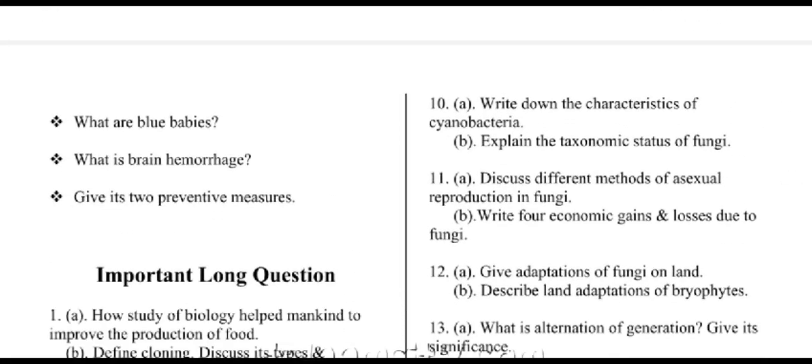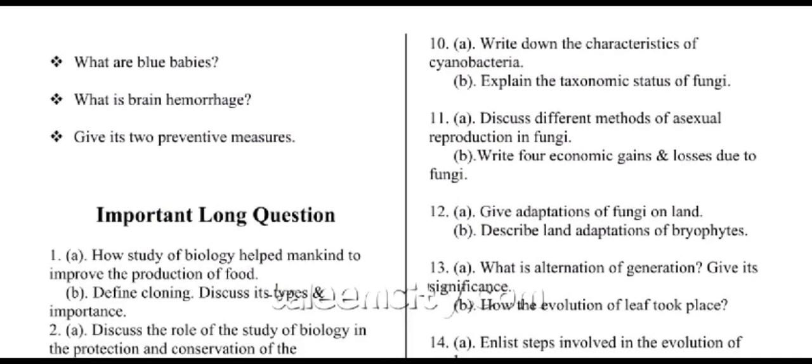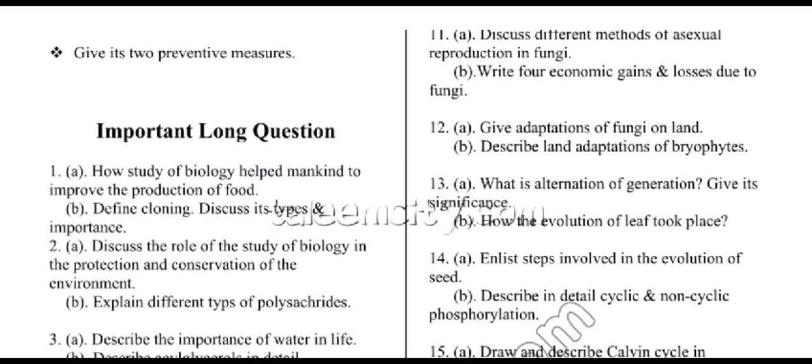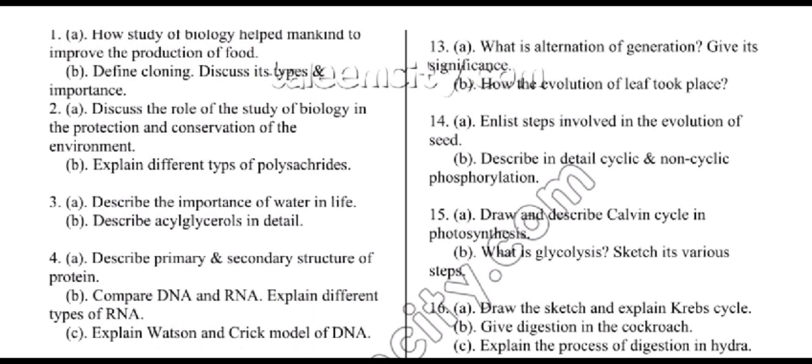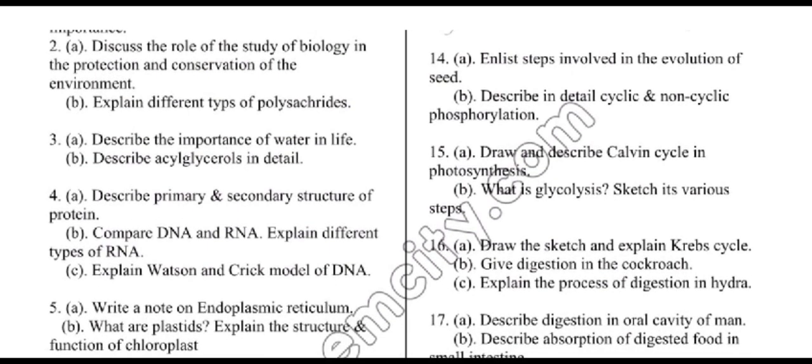Write down the characteristics of cyanobacteria; explain the taxonomic status of fungi; discuss different methods of asexual reproduction in fungi; write four economic gains and losses due to fungi; give adaptations of fungi on land; describe land adaptations of bryophytes; what is alternation of generation — give its significance; how did the evolution of leaf take place; enlist steps involved in the evolution of seed; describe in detail cyclic and non-cyclic phosphorylation.